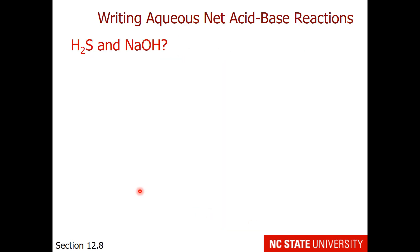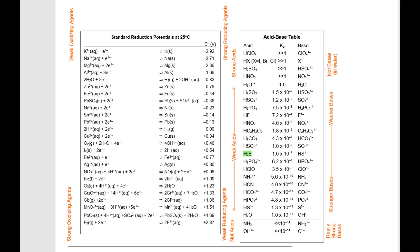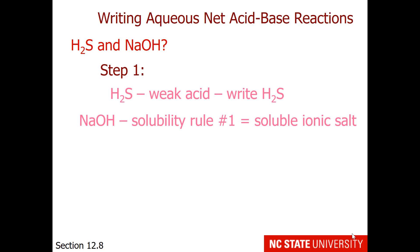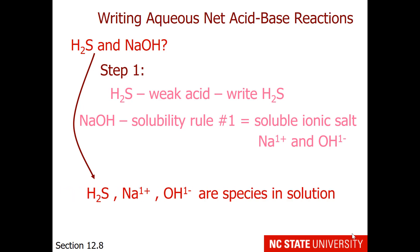Here's an example: H₂S and NaOH. Here is H₂S on the acid-base table — it's in the region of weak acids. For step 1, H₂S is a weak acid, so we write it as it is; most of the species in solution is H₂S. NaOH is a soluble ionic salt, so we separate the cation and anion in aqueous solution. This gives us three species floating in solution: H₂S, sodium ion, and hydroxide ion.